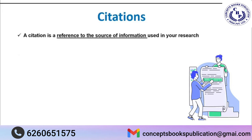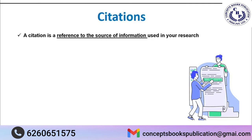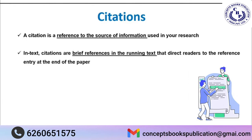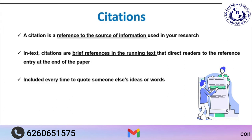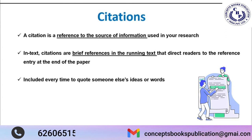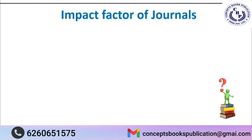A citation is a reference to the source of information used in your research. Citing a work means a proper reference of the source of information is included in your article. In-text brief references are given in the running text, and the full reference list is included at the end of the manuscript. Citation is a very important part of research writing, and proper citations also help avoid plagiarism.